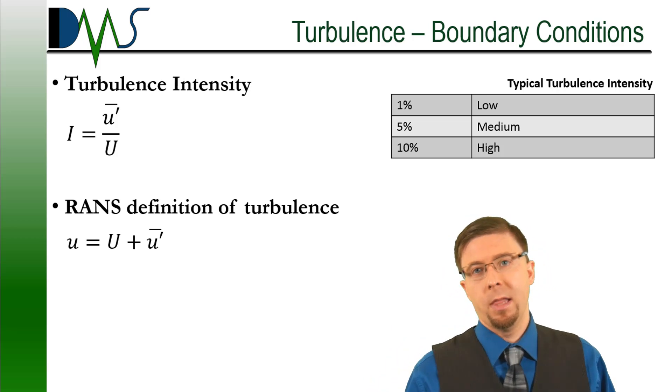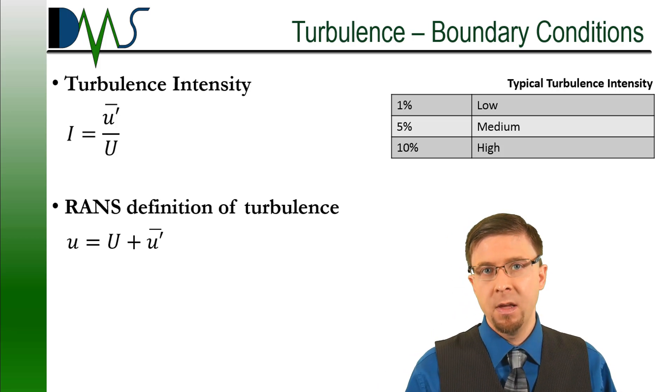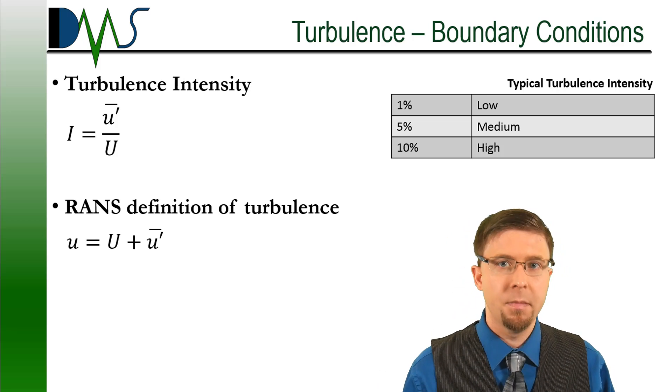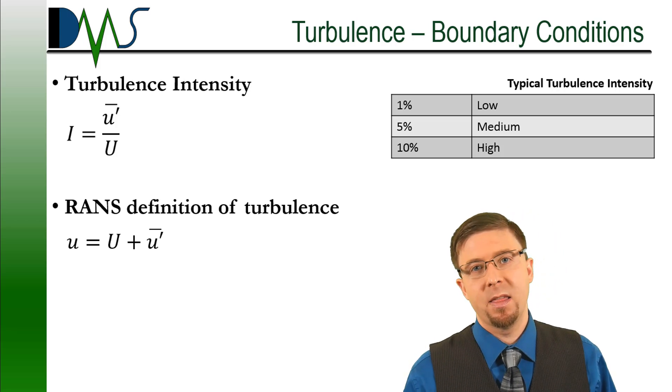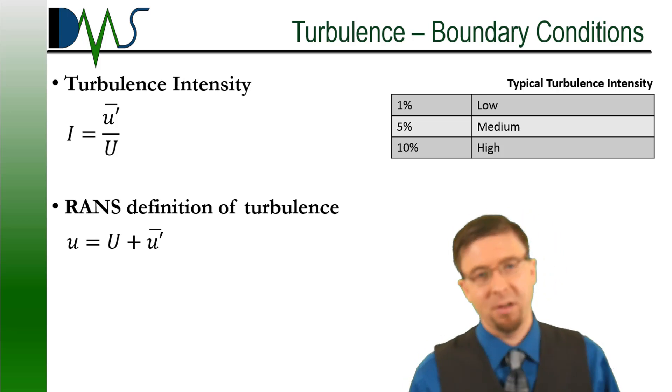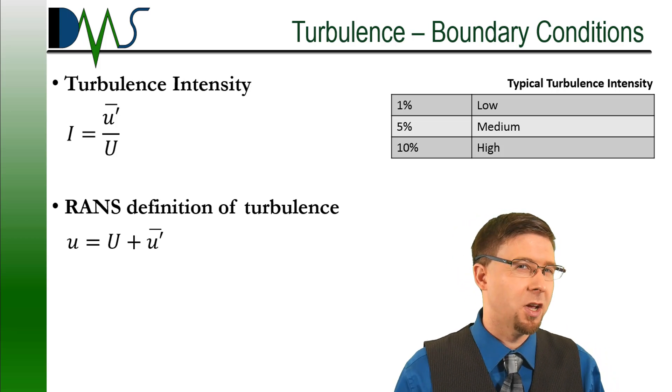So if you're looking for a low amount of turbulence intensity, that's around 1%. 5% would be medium, and 10% would be high turbulence intensity. Anything higher than 10%, you're talking pretty darn high turbulence, and you're starting to get into unrealistic terms.